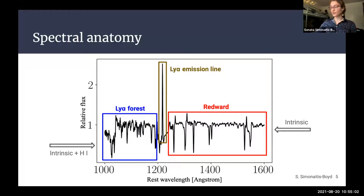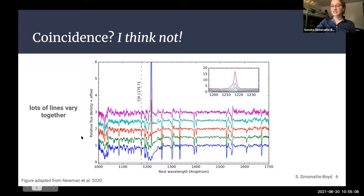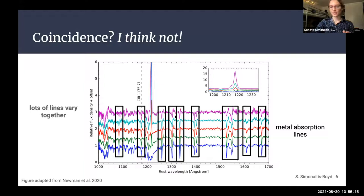But how do we know that there's actually a reliable model that we can make? Well, as it turns out, a lot of these spectral lines vary together, specifically metal absorption lines. The lines in the magenta spectrum are pretty shallow, but as we go down the spectrum from magenta all the way down to the dark blue, the absorption lines get deeper, and they get deeper all throughout each spectrum. What this tells us is that we can use information in one part of the spectrum to predict what other parts of the spectrum will look like. For example, we can use the spectrum redward of Lyman Alpha to predict the forest.